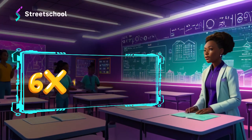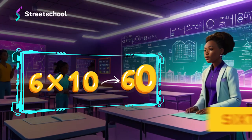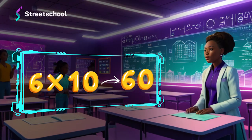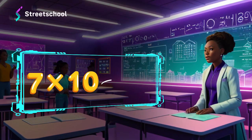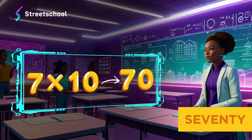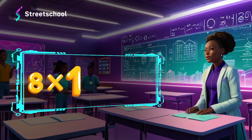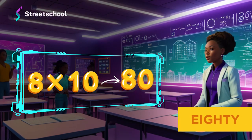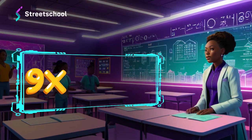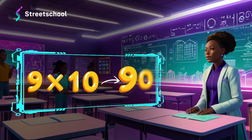6 tens makes 60. 7 tens makes 70. 8 tens makes 80. 9 tens makes 90.